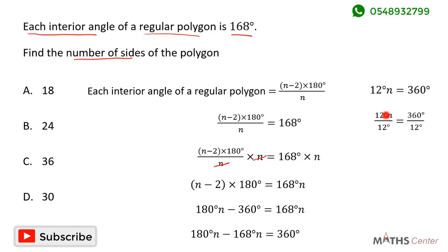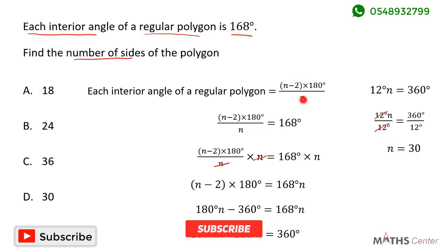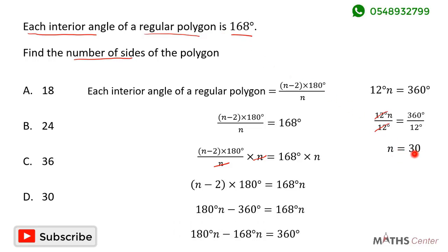To find n we divide both sides by 12 degrees. 360 degrees divided by 12 degrees gives us 30. So n equals 30, meaning the number of sides of this regular polygon is 30. When we look through the options we can see that the correct option is D.